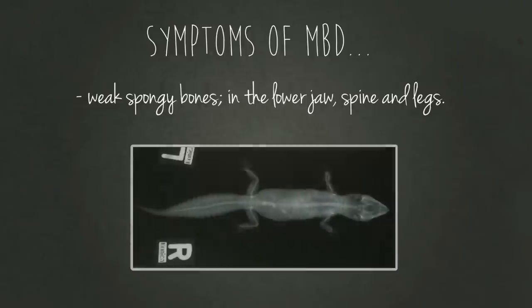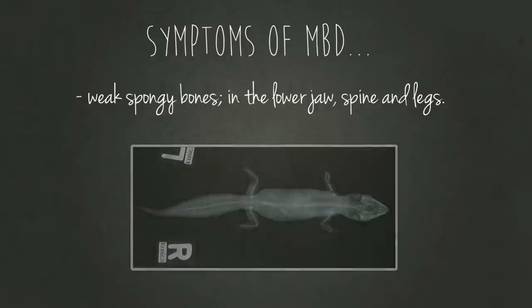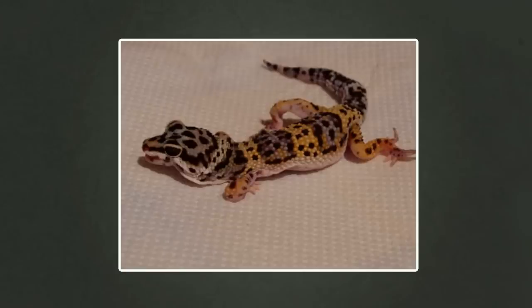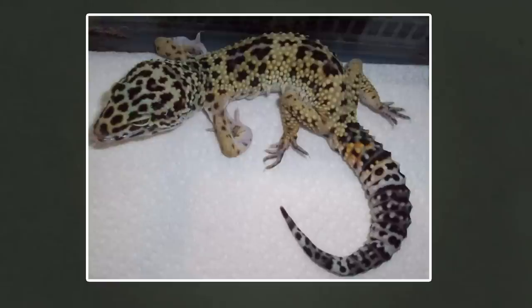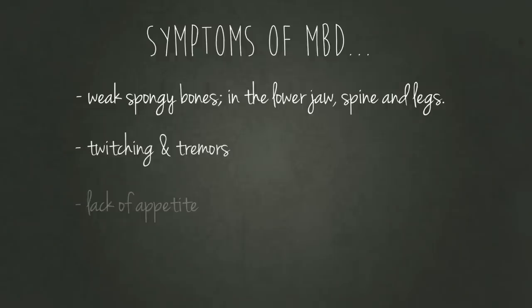Symptoms of MBD include weak bones which feel kind of spongy, especially in the lower jaw and also in the spine and legs. Here are some disturbing images, but they are very important because they will show you what can happen to your gecko if you do not provide the correct diet. Other symptoms such as twitching and tremors may occur, and your gecko will probably have a major lack of appetite.